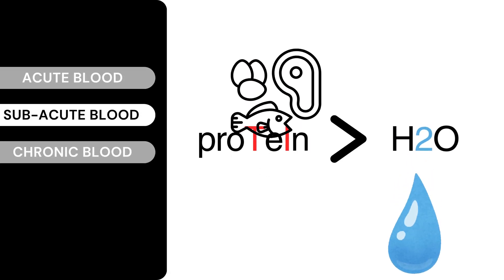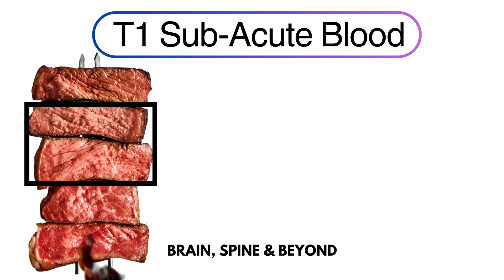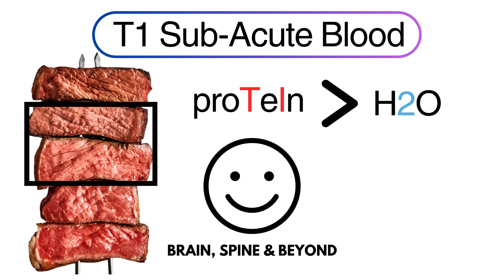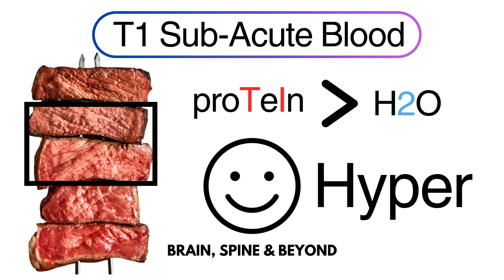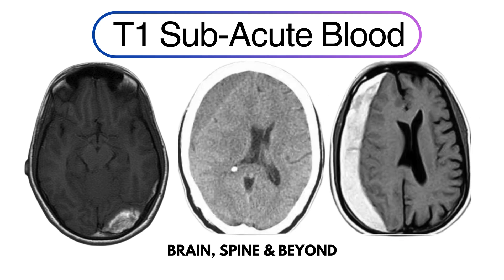In the subacute phase, protein content goes up and water reduces. Think of the steak example: if we heat it up more, water evaporates — it becomes medium-done, tender. Protein is up, T1 loves it, so it becomes hyper-intense. You can see this hemorrhage is bright on T1 and it's subacute. Here is a CT scan of a subdural hematoma — the blood is not bright, so it's not acute, and it's not dark, so it's not chronic either. It's subacute. On MRI scan it appears bright, hyper-intense.